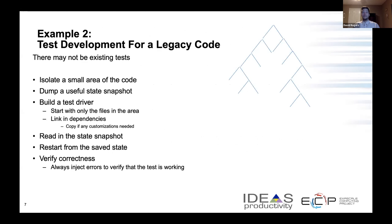Here's an example from the E3SM code — the Exascale Earth System Model. Although advanced now, it originated from a combination of Fortran codes dealing with various aspects of climate modeling. As a combination of many modules, it was difficult to create an overall testing strategy. Shown on the tree on the right is an overall schematic of the way that modules in the code can link together and import different parts of each module.